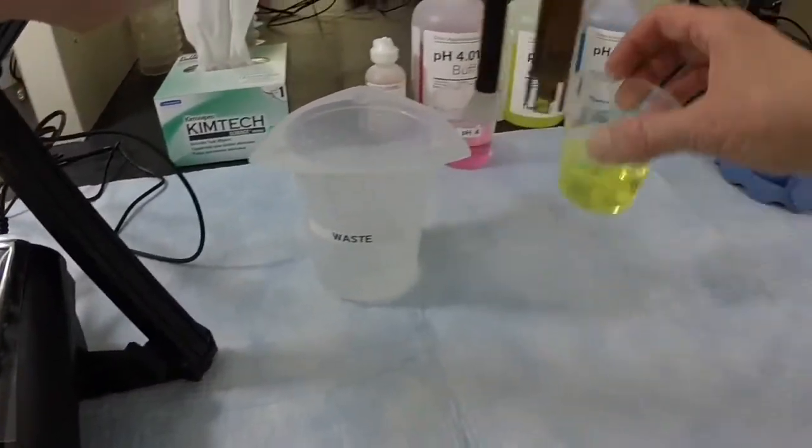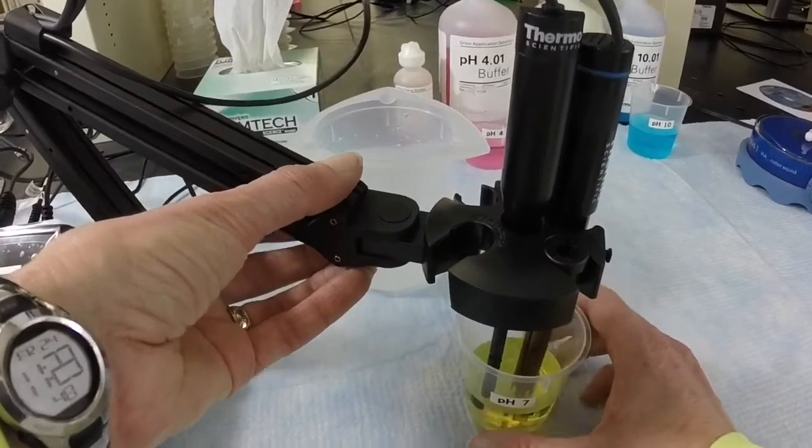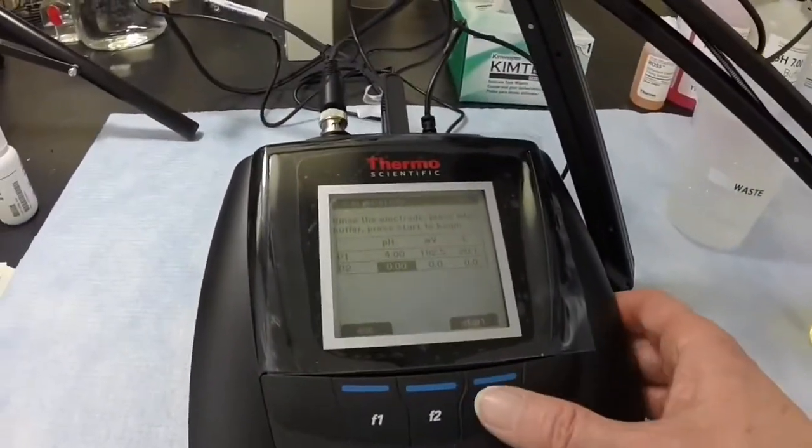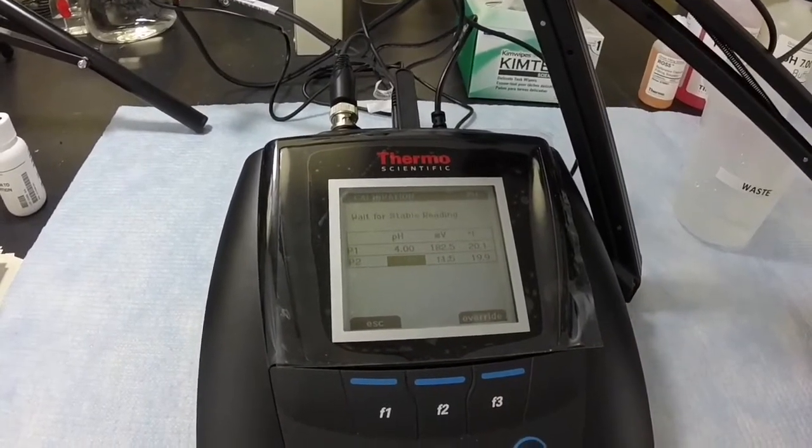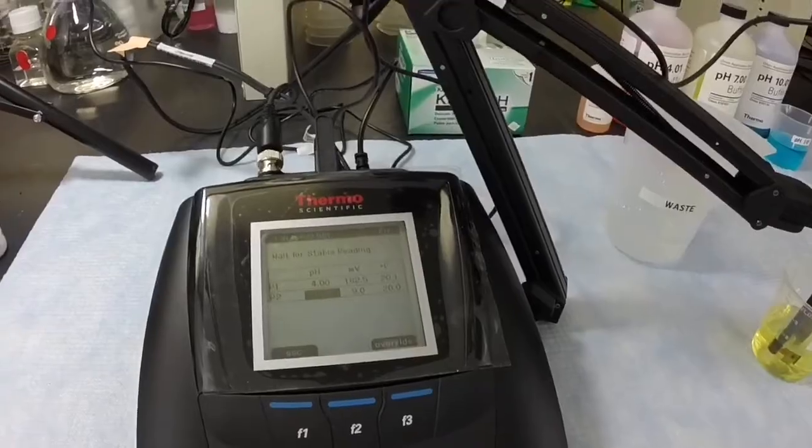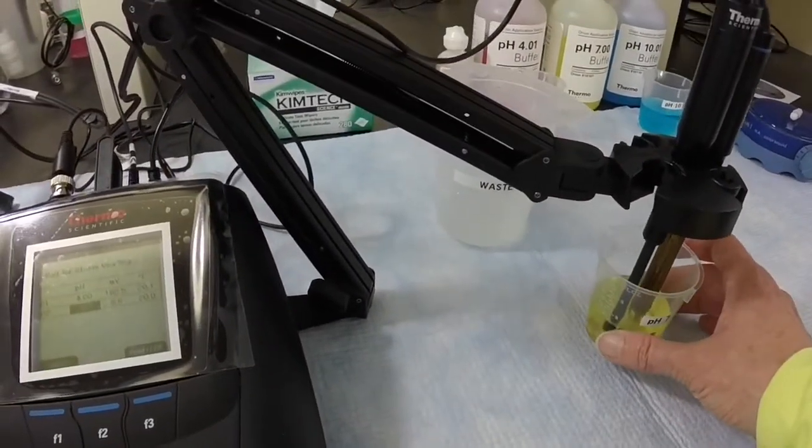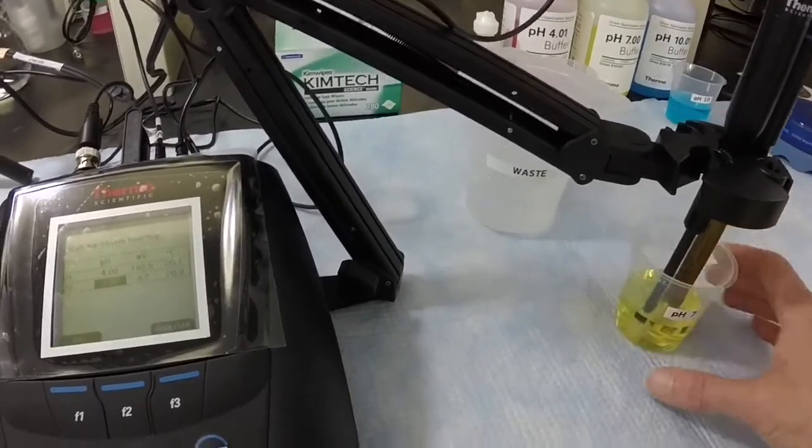Then insert the electrode and stirrer into the second buffer, which is pH 7 buffer here. Press START on the meter. The pH will display and blink while waiting for the reading to stabilize. When the reading is stable, it will stop flashing and lock on the correct pH value for that buffer at the temperature measured.